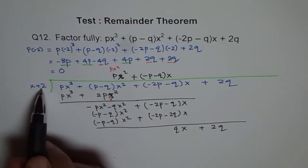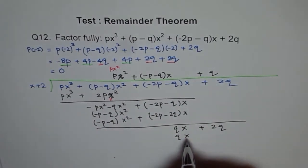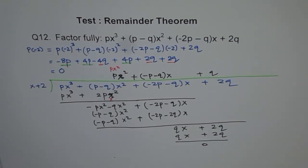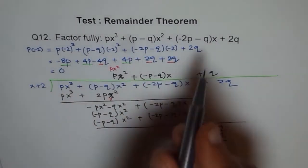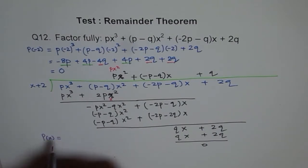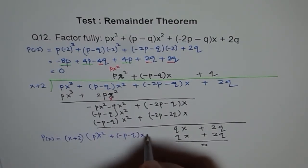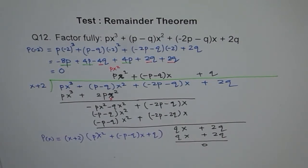Now x plus 2, we need to multiply this by q, so we get plus q. When I multiply by q, I get qx plus 2q, and my remainder is 0. So that becomes a quotient, and therefore, now I can write down my answer: p(x) = (x+2)(px² + (-p-q)x + q).